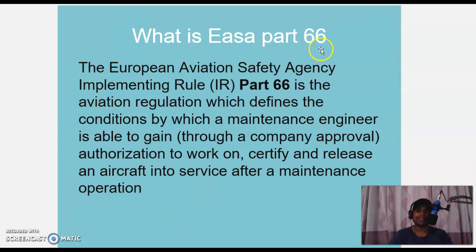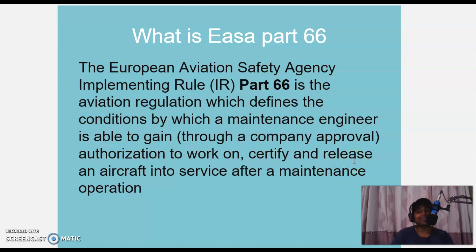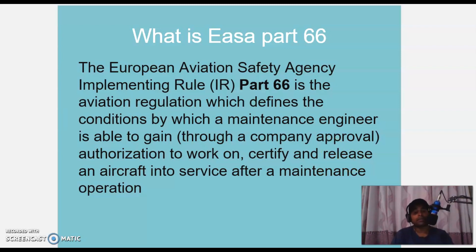What is EASA Part 66? The European Aviation Safety Agency implementing rule Part 66 is the aviation regulation which defines the conditions by which a maintenance engineer is able to gain through company approval, authorization to work on, certify and release an aircraft into service after a maintenance operation. This license belongs to the persons who are going to sign for a CRS of an aircraft.